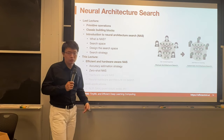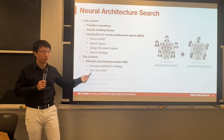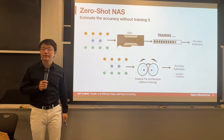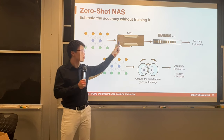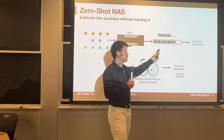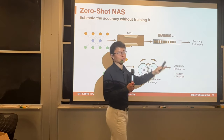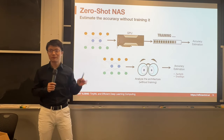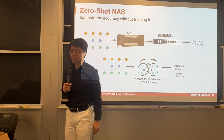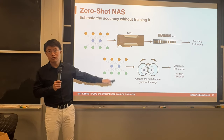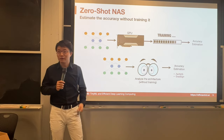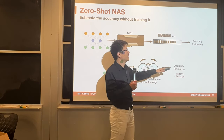What if we go to the other extreme — zero-shot NAS — and don't train at all? Can we estimate accuracy without even training? Previously, to assess if an architecture is good, we had to train it on a GPU for quite a while. Zero-shot NAS means we just look at the network, analyze different components without training, and estimate accuracy. We're going to see two methods: Zen-NAS and the gradient sign method.